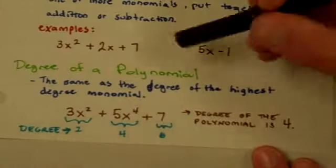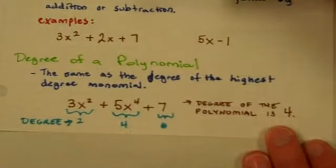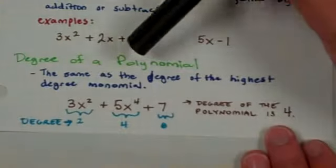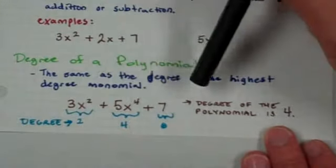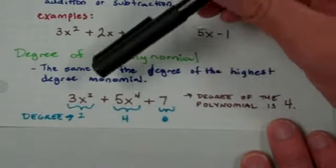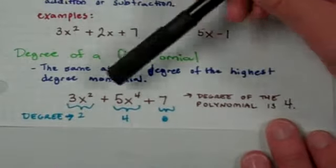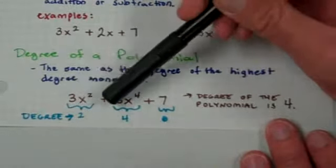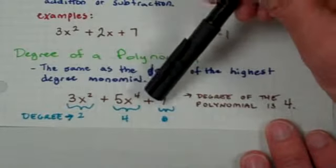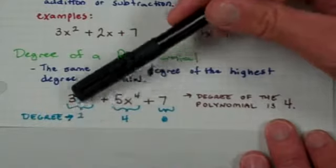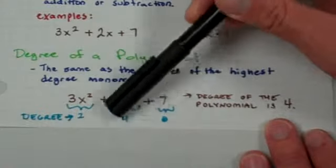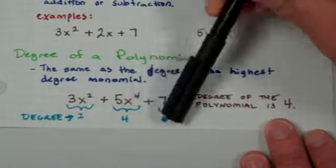Now polynomials also have degrees. The degree of a polynomial is the same as the degree of the highest degree monomial. Which is kind of a mouthful but it makes sense when you look at it. So for example if I have this polynomial 3x squared plus 5x to the fourth plus 7, look at the degrees of each monomial. This one has a degree of 2, this has a degree of 4, and this has a degree of 0.